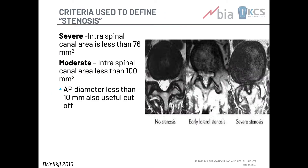From an imaging perspective, what are the numbers we use to define stenosis? Severe would be an intercanal area less than 76 mm². Moderate is intercanal area less than 100 mm². That can be hard to calculate, but a simple measurement of the AP diameter of less than 10 mm is also a useful cutoff point.